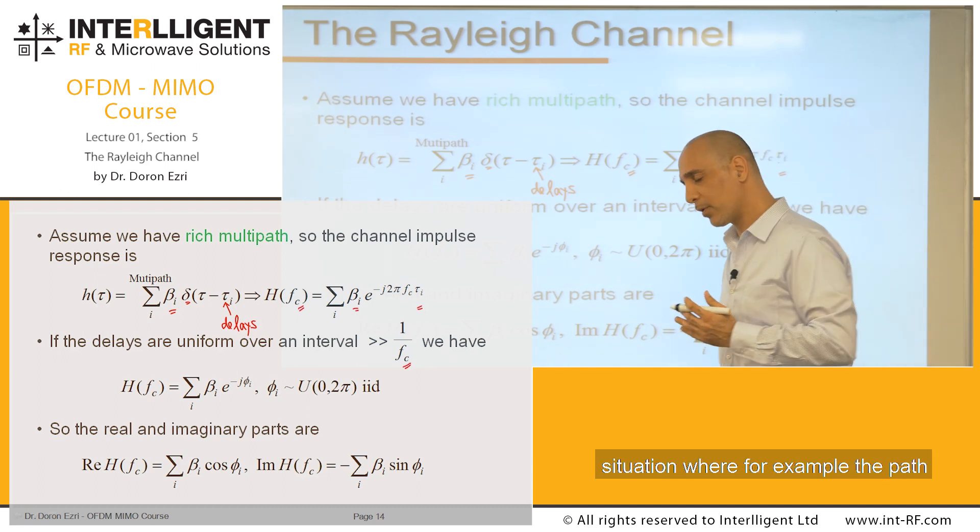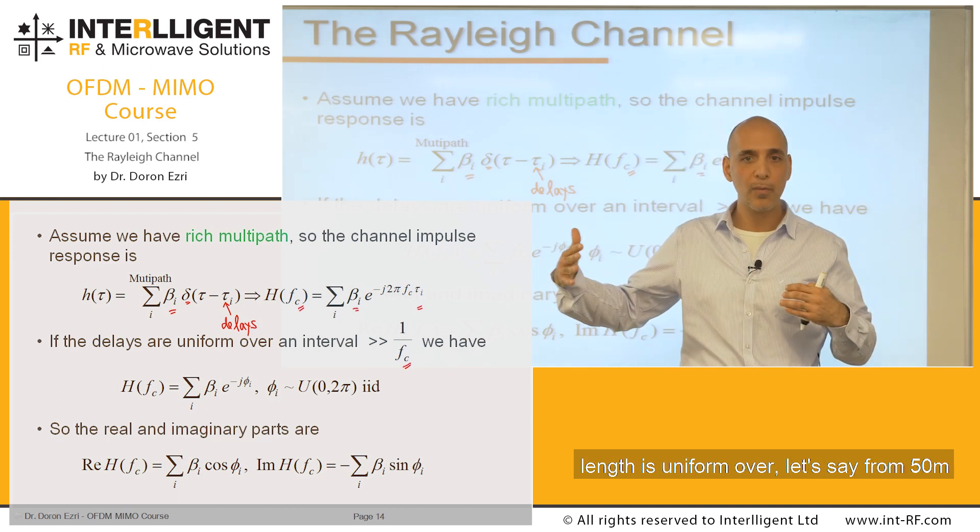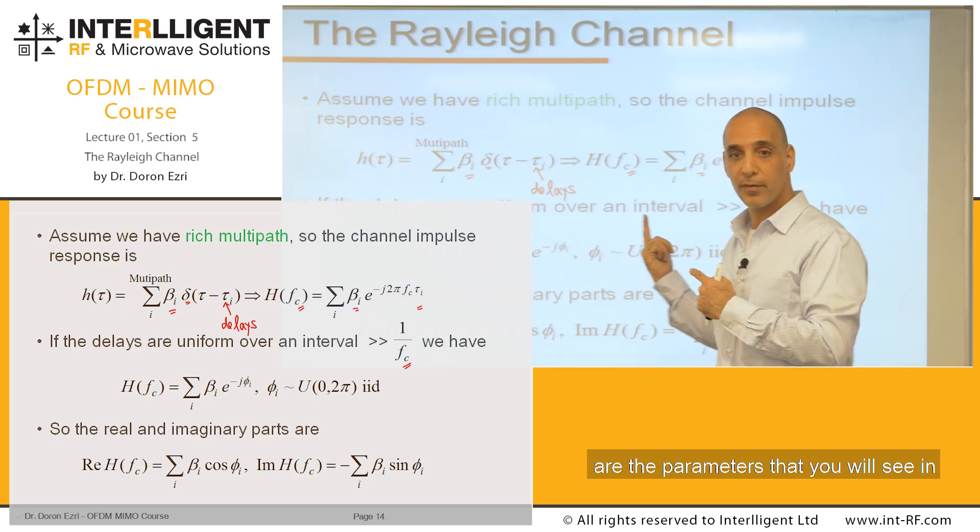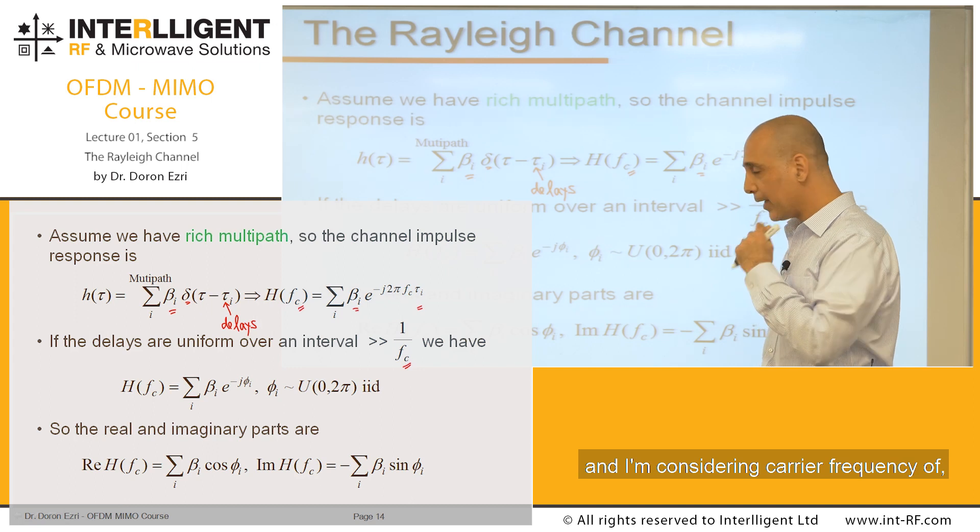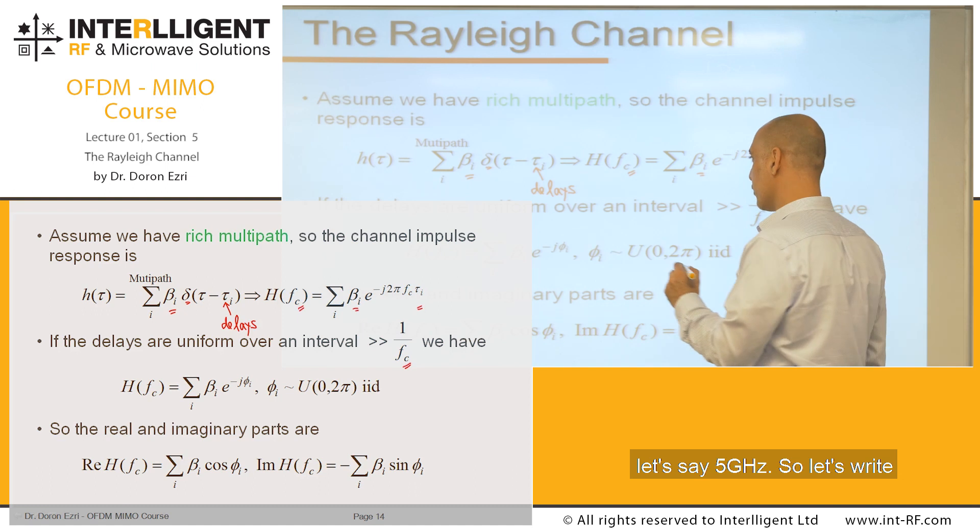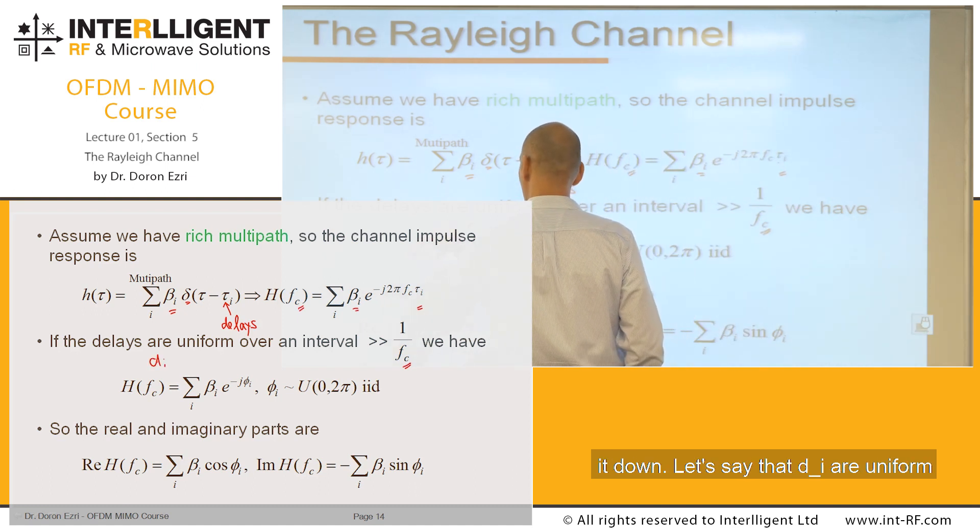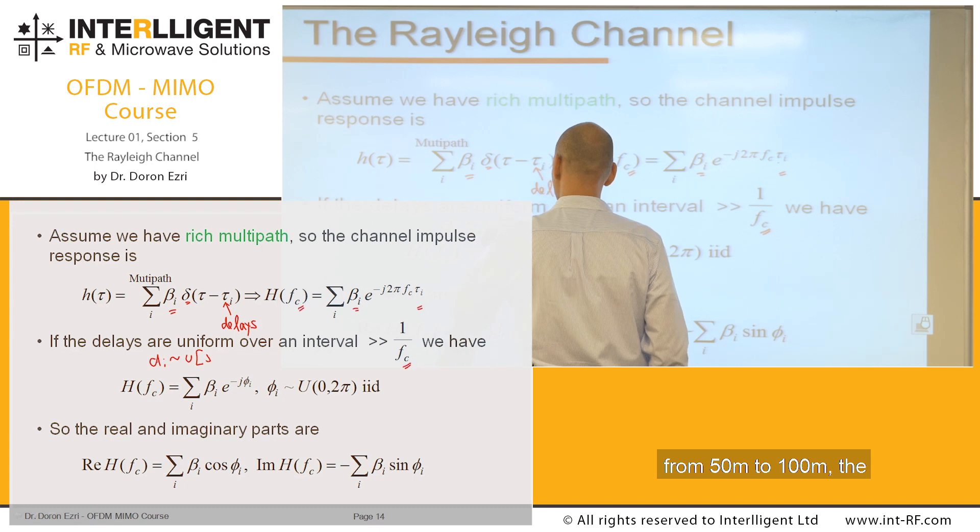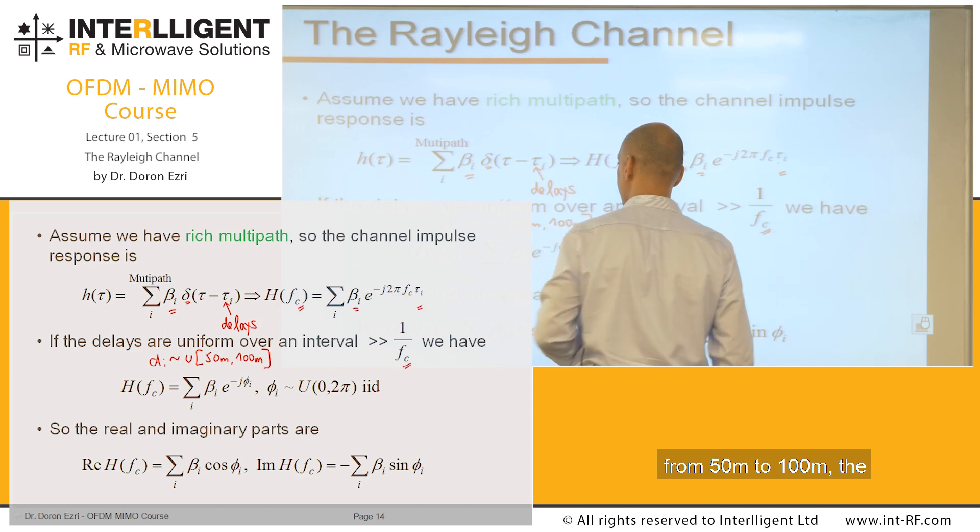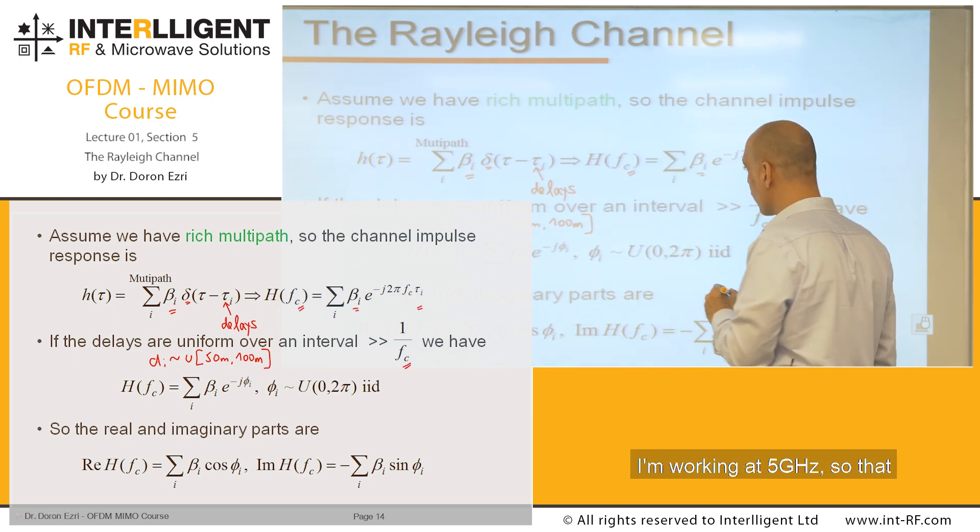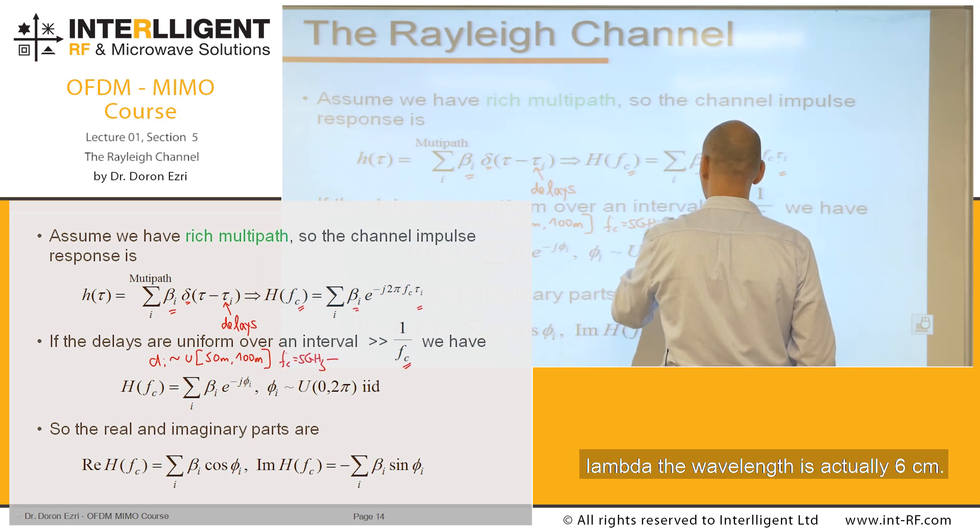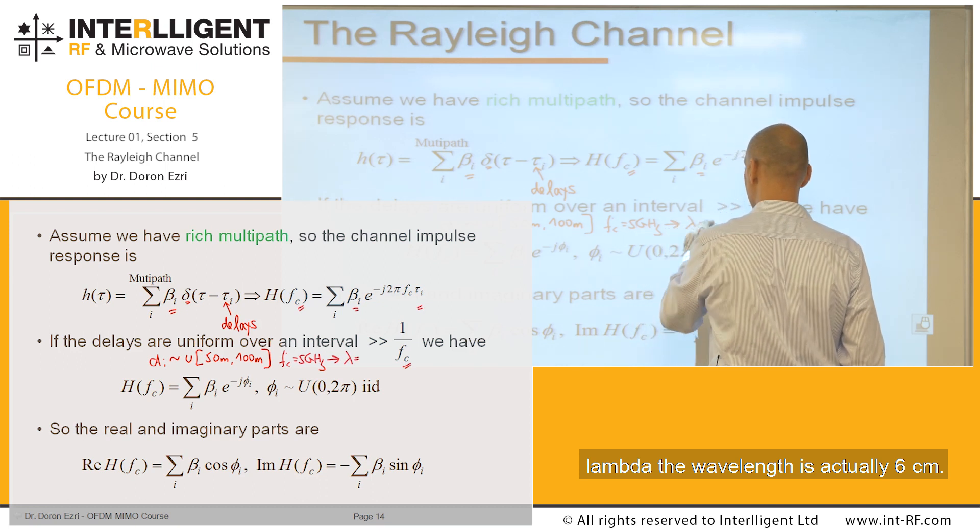Consider a situation where the path length is uniform over, from 50 meters to 100 meters. These are the parameters that you will see in the exercise for this lecture. And I'm considering carrier frequency of 5 gigahertz. Let's say that D_i are uniform from 50 meters to 100 meters, the length of the path, and I'm working at 5 gigahertz. So lambda, the wavelength, is actually 6 centimeters.